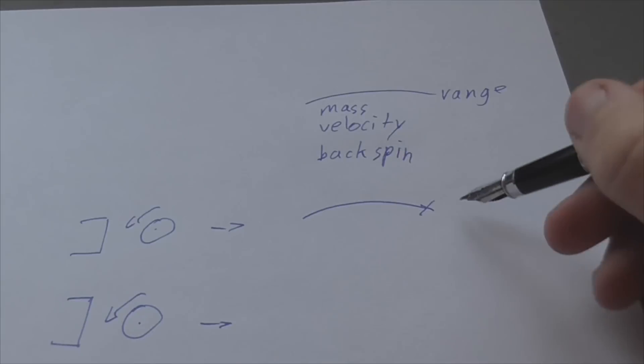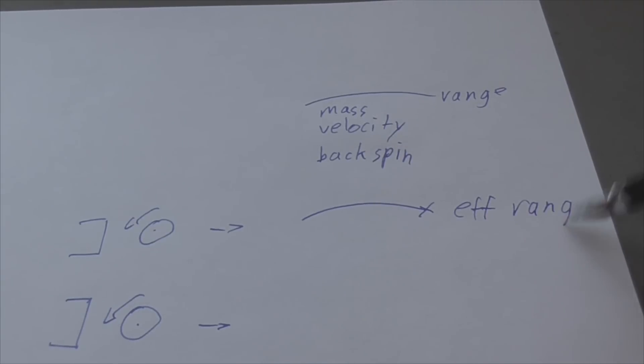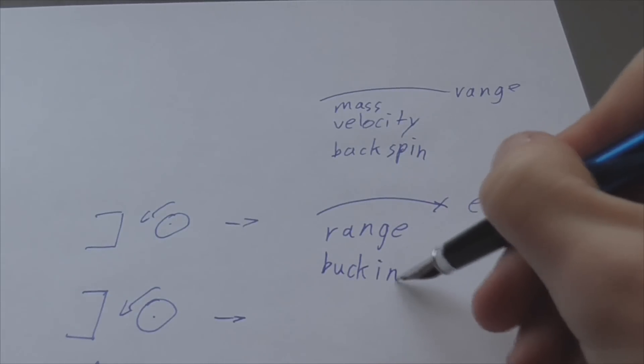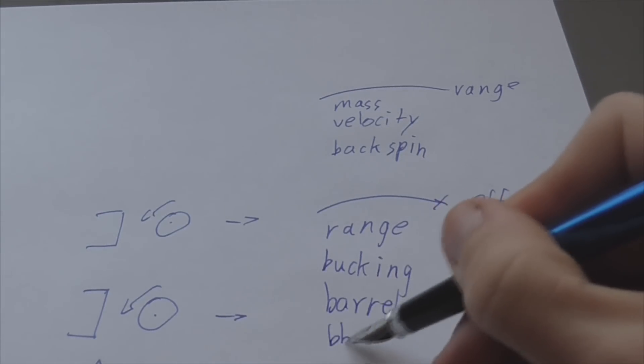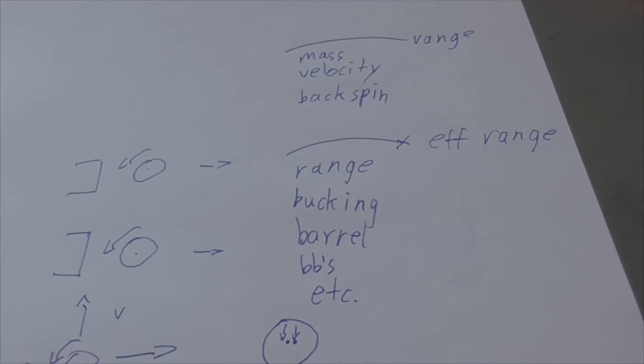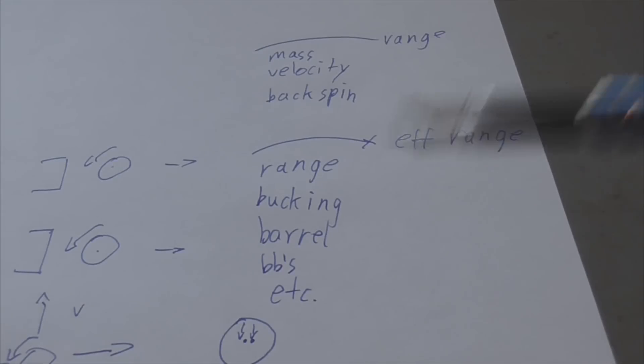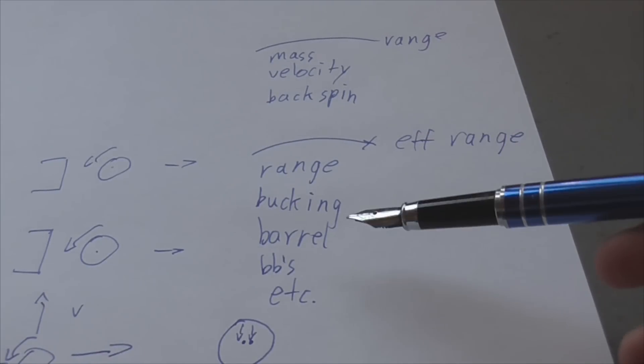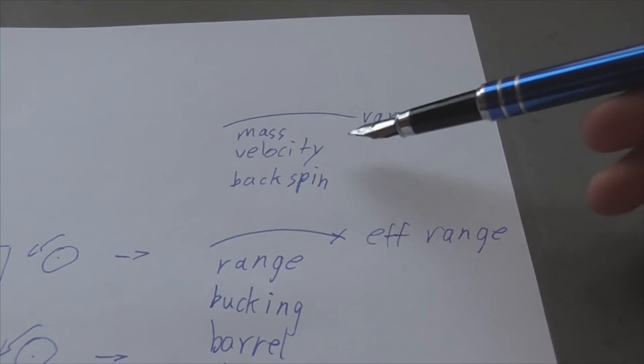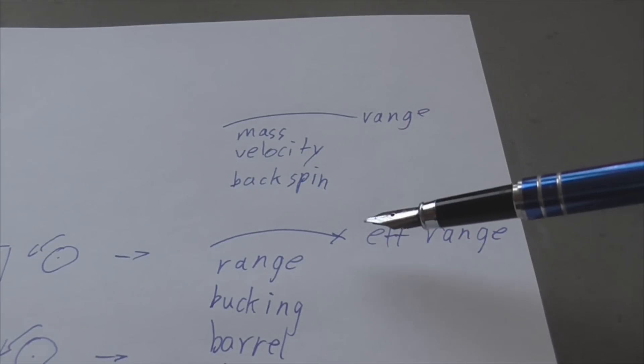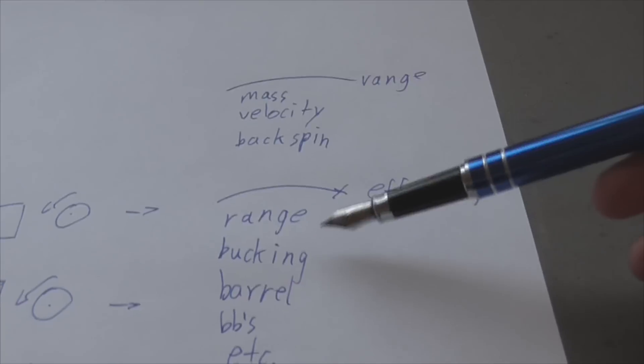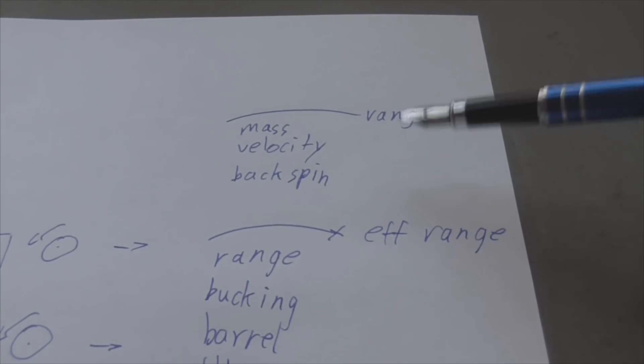And we also have the effective range, which depends on the range, the bucking, barrel, BBs, etc. So of course these variables are all very important. And it is therefore important to upgrade your barrel, your bucking, your BBs, everything. But it is not going to give you more range, it's just going to make your shots more accurate. And I'm not saying that's not important, but there is a huge misconception about it, that all these things influence range, improve range, which is simply not true.